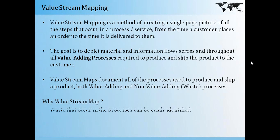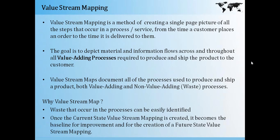Why do we need a value stream map? A value stream map helps you identify what are the waste or non-value-adding processes in the flow and helps you identify them very easily. Once we create a current state value stream map, it becomes a baseline for improvement and for the creation of a future state value stream map. When do you need to use it? If your customers are waiting a long time, or delays are occurring, or you think your process could be made much faster or more efficient, the best tool from the lean toolkit would be value stream mapping.